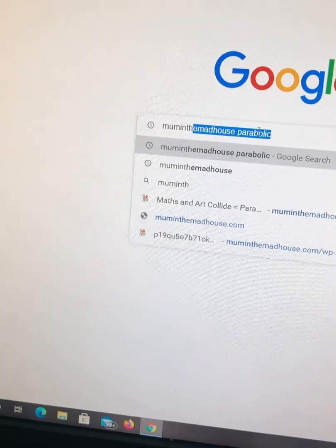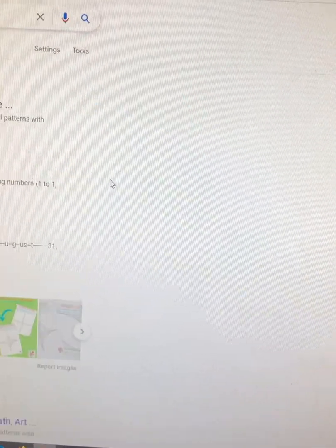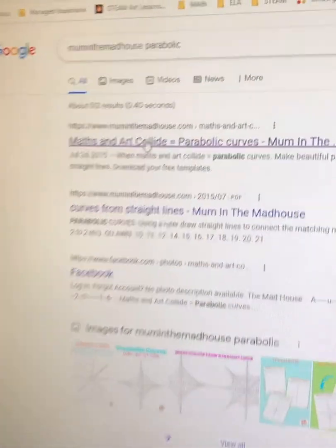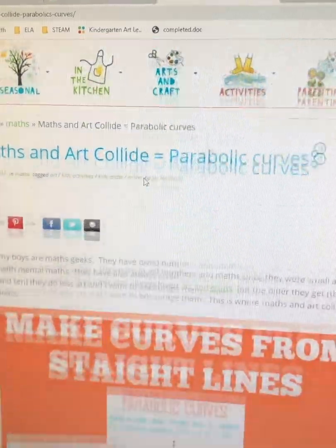So the template I use is from Mum in the Madhouse. If you Google Mum in the Madhouse and type in parabolic, it should be the very first Google search at the top. I will also put the link to this below.